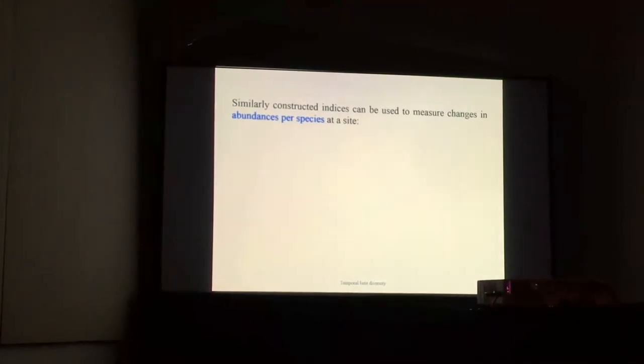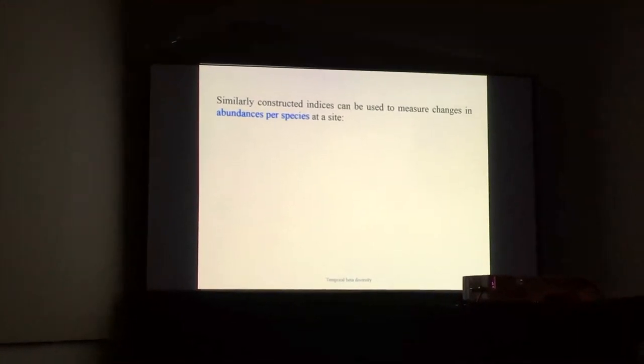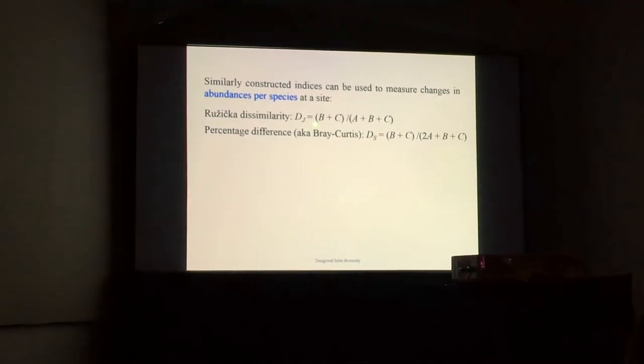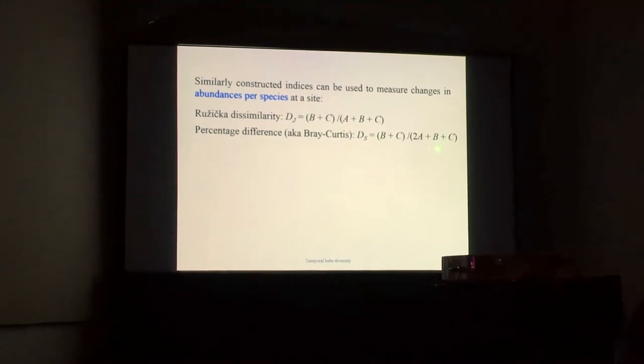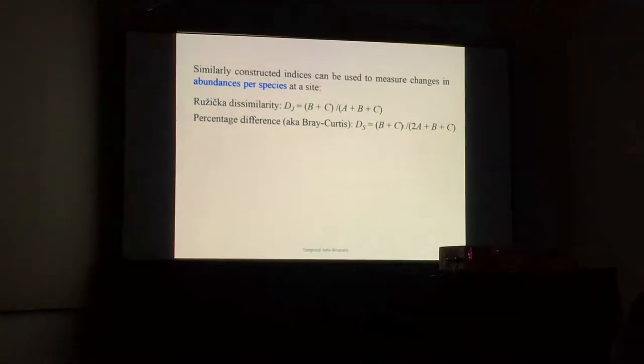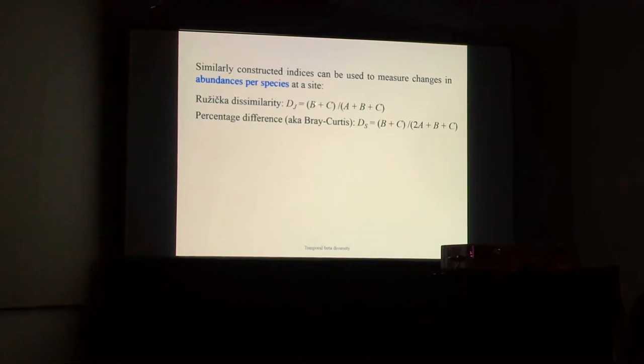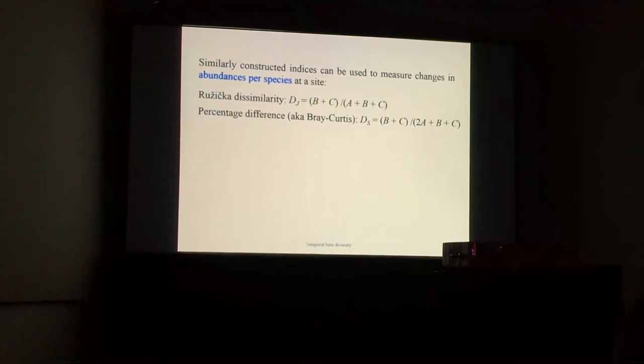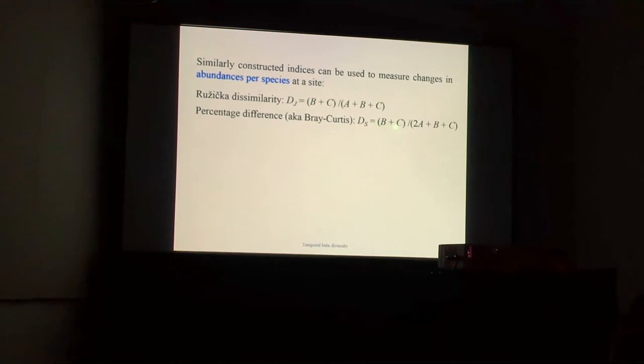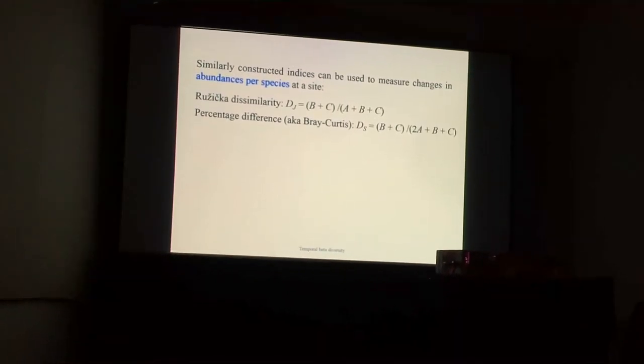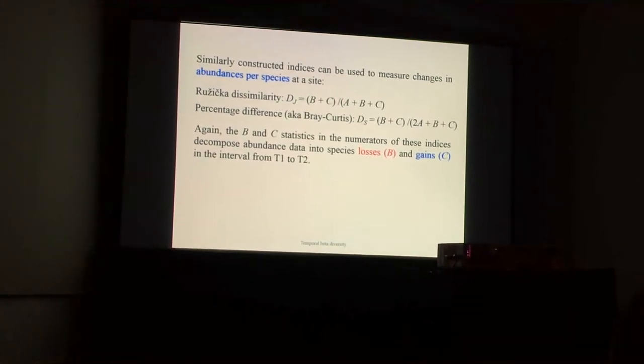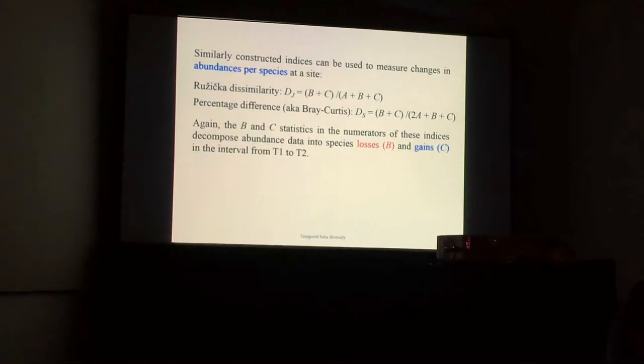Similarly constructed indices can be used to measure changes in abundance for species at the site. I'll not walk you through the translation in the same way, but essentially these indices are constructed in the same way as the previous ones, except that I'm using large letters here, with B and C being the abundances per species summed over all species, lost and gained. This is the dissimilarity portion, and that's the denominator. For the percentage difference, it is the same numerator but with a different denominator. These are usual indices, and again, the B and C statistics decompose abundance data into species losses and gains.